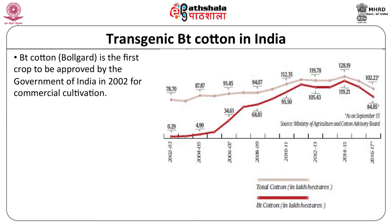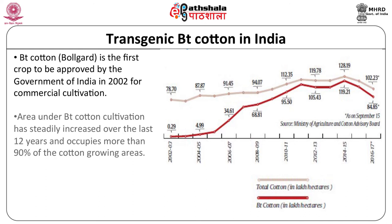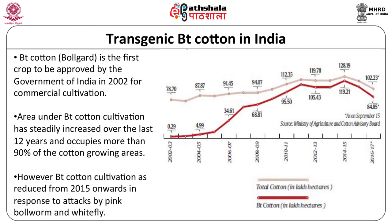Bt cotton is the first crop to be approved by the Government of India in 2002 for commercial cultivation. Area under Bt cotton cultivation has steadily increased over the last 12 years and occupies more than 90 percent of the crop growing areas, making India the number two cotton producer in the world. However, Bt cotton cultivation has declined from 2015 onwards in response to attacks by pink bollworm and whitefly. Efforts are ongoing in various public-funded institutes to develop cotton transgenics that would reduce the need for application of insecticides, and cotton transgenics are currently considered one of the most important components of integrated pest management.